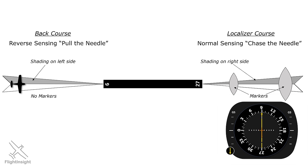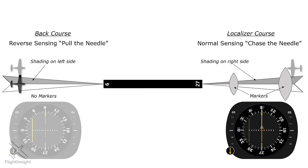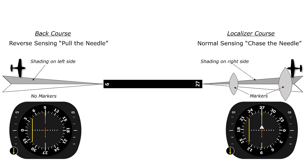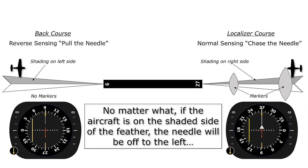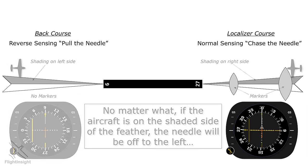This gets really confusing on the test. So here's an important rule of thumb, both for the test and for real-world flying: no matter what, if the aircraft is on the shaded side of the feather, the needle will be off to the left, as it is here in both depictions.